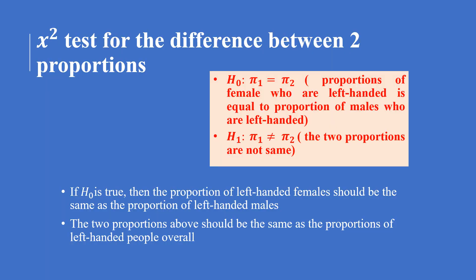When testing for independence of two variables, we first start with a contingency table of observed frequencies reflecting the intersection of various categories of the two variables. After collecting data in the contingency table, you then need to formulate the null and alternative hypotheses.